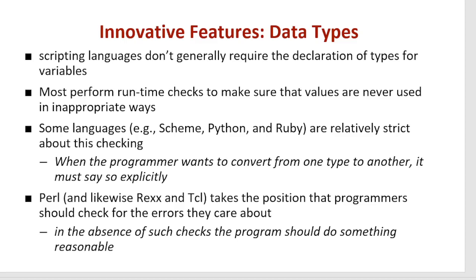Some languages such as Scheme, Python, and Ruby are relatively strict about type checking. When the programmer wants to convert from one type to another, it must say so explicitly — that is, explicit conversion from one type to another.